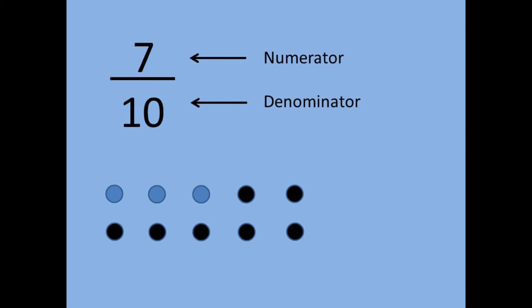Each fraction has two parts: the denominator and the numerator. The denominator is the bottom number and tells how many pieces are in the whole or the whole group. In this fraction, the denominator is 10, which means that there are 10 circles altogether. The numerator is the top number and tells how many pieces of the set we're focused on. In this fraction, the numerator is 7 because 7 of the circles are black.